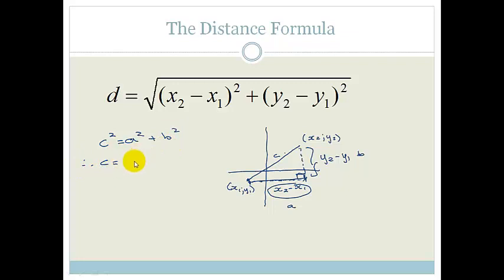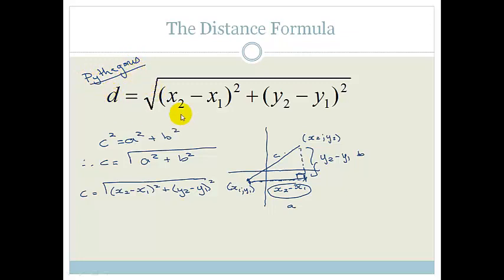Therefore, c is equal to the square root of a squared plus b squared. But a is x2 minus x1, so c is going to be the square root of (x2 minus x1) all squared plus (y2 minus y1) all squared. So this big formula here is just using Pythagoras. But you will be given it on your formula sheet, and that is the distance formula.